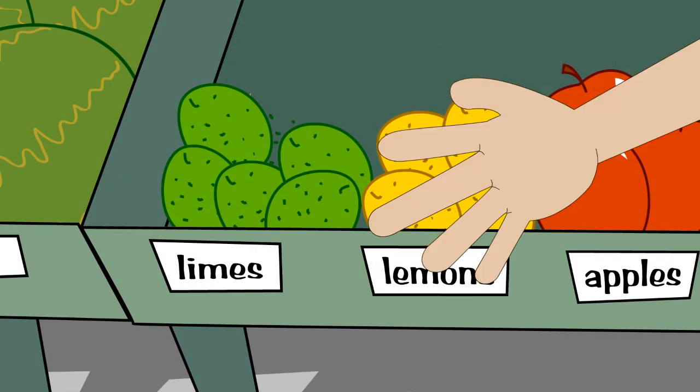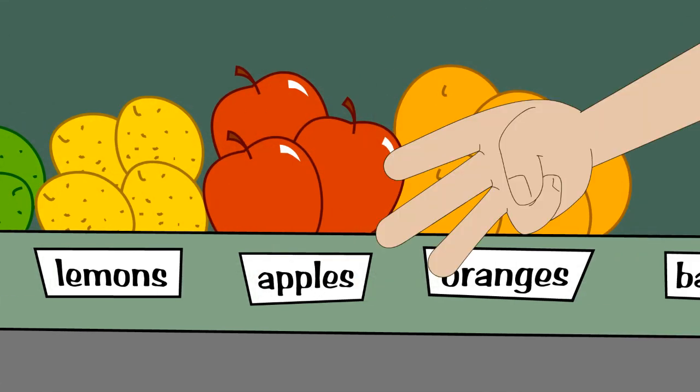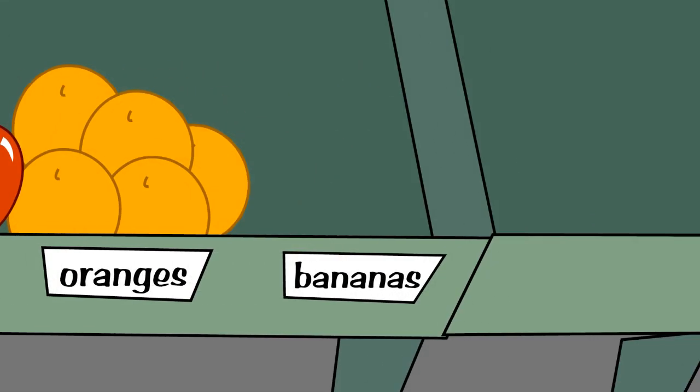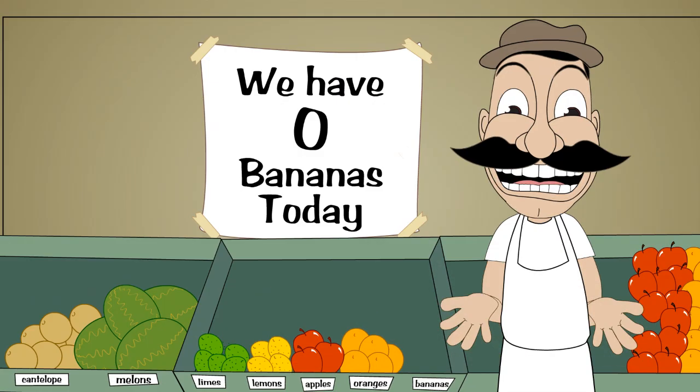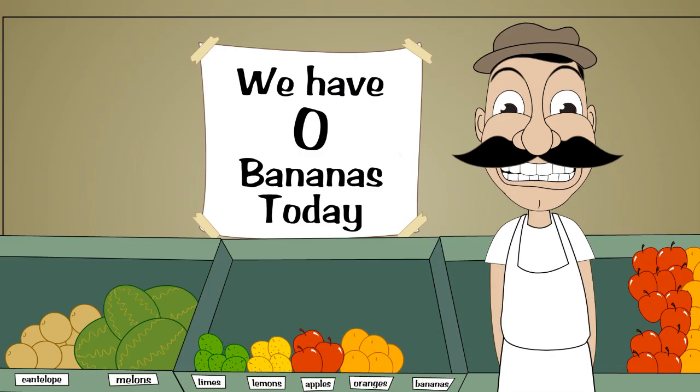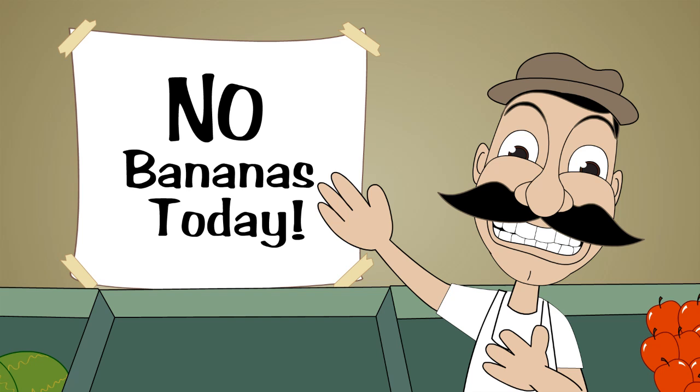Natural numbers do not include the number zero. When people started counting things it probably seemed pointless to invent a number for no things. Why would you say the number of bananas we have is zero when you could just say, yes, we have no bananas.